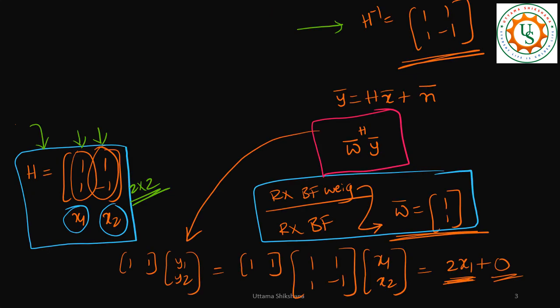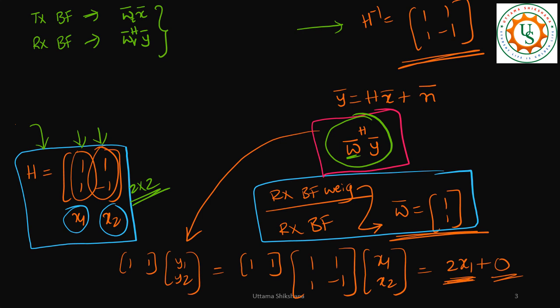At the receiver I had to perform receive beamforming to get back x1 and x2. How to choose the weight vector W was discussed in the previous video. Here I want to mention transmit beamforming: if you are doing transmit beamforming, W_bar vector is multiplied to x_bar. At the receiver side, if you are doing beamforming, it should be W_bar applied to y_bar. This operation could be transmitter side or receiver side.